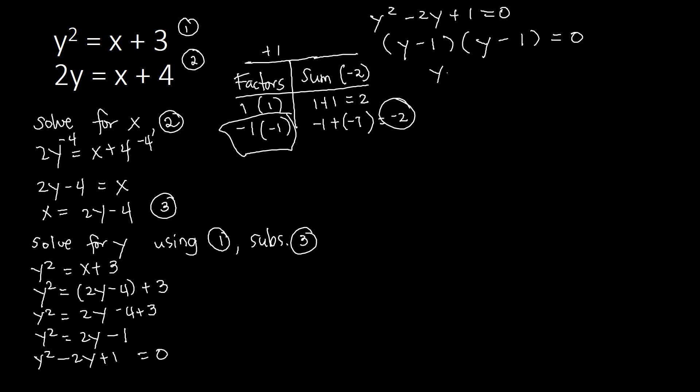Equate factors. y minus 1 equal to 0. The other one is y minus 1 equal to 0. Our y is equal to 1 here. Our y is also equal to 1. So we need to say our y is with multiplicity of 2 with a value of 1.